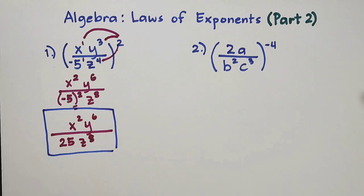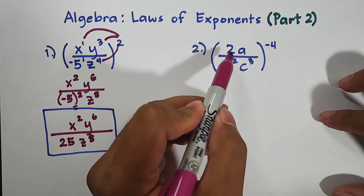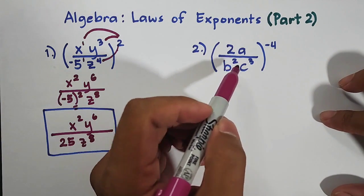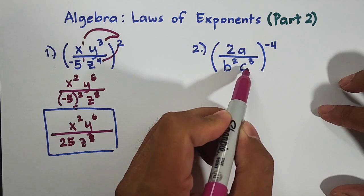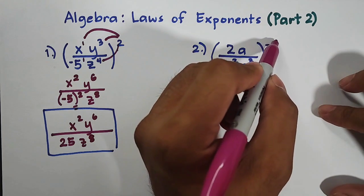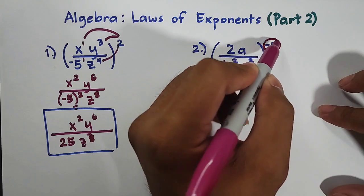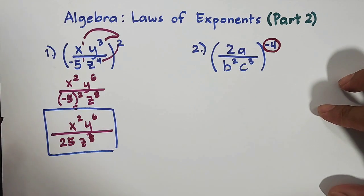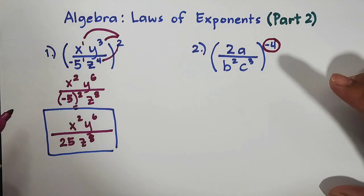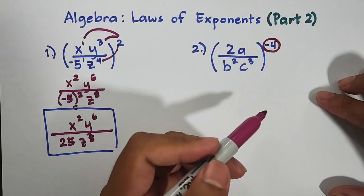So for the second example, we have here the quantity of 2a over b squared c cubed raised to negative 4. So if you notice, the exponent here is negative. So our task here, before we simplify the whole expression, is that we need to make the exponent positive. So how are we going to do that?